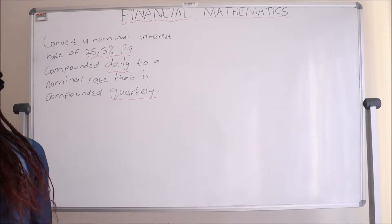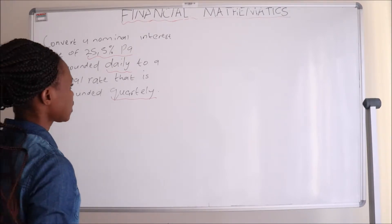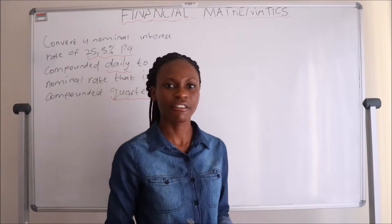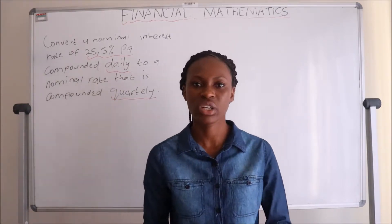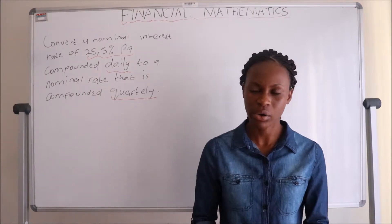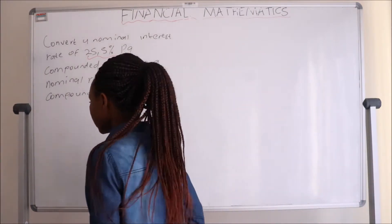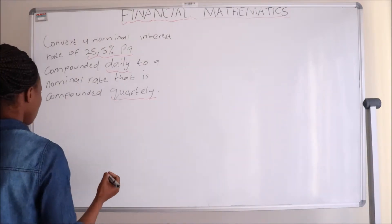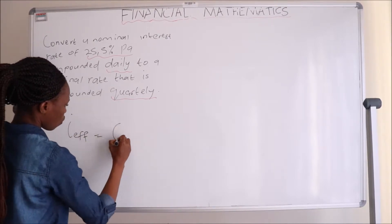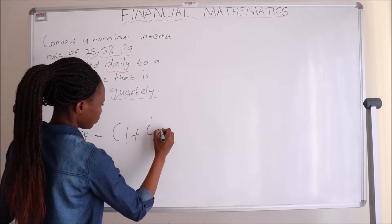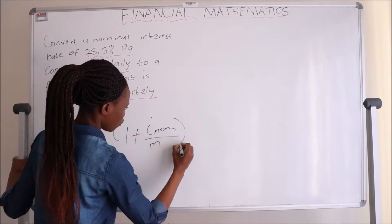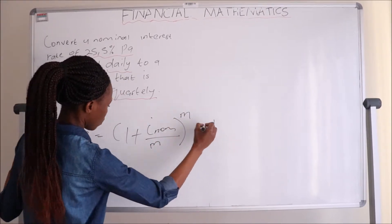What we need to do here is to first calculate the effective interest rate, and after that convert it to a nominal interest rate compounded quarterly. Our equation is: I_effective = (1 + I_nominal / M)^M − 1.